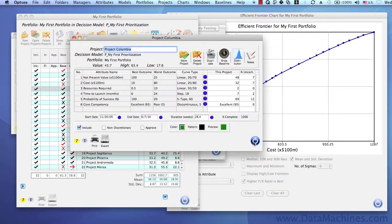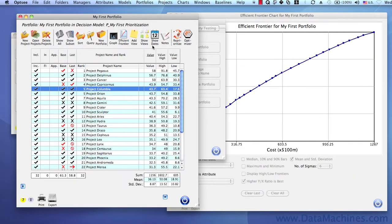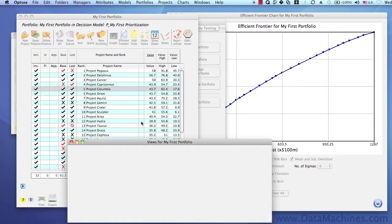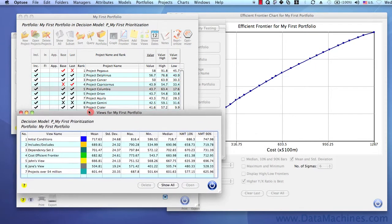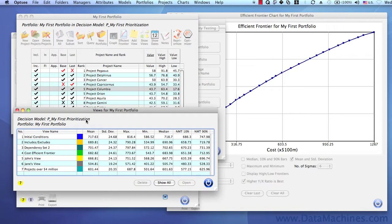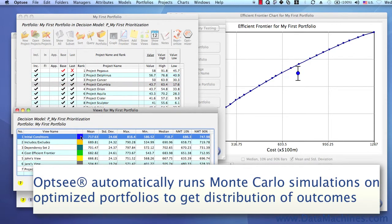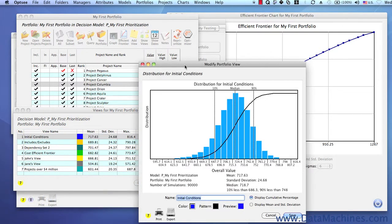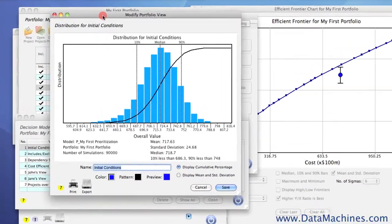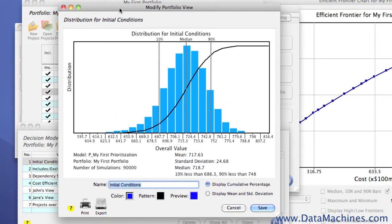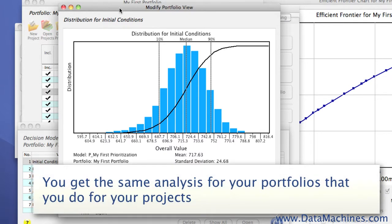But having probability distributions for projects alone isn't enough. You need them for your portfolio selections too. OPSEE automatically runs Monte Carlo simulations whenever you run an optimization and lets you easily run your own Monte Carlo simulations on any portfolio that you select manually and save as a view. So just like projects, you're not guessing at what the distribution around your portfolio value is. You know what it is based on the uncertainty in each individual project.